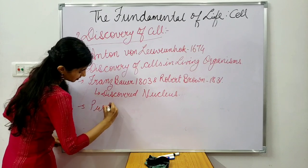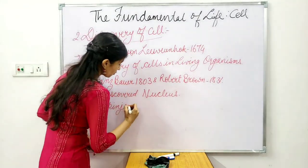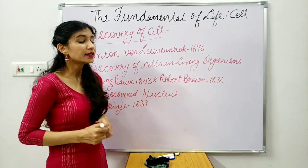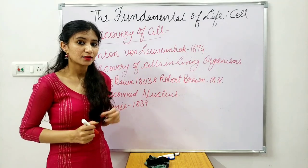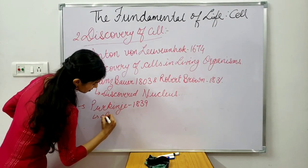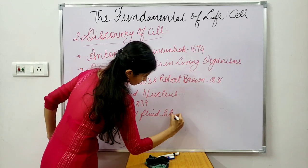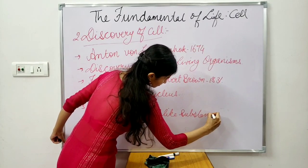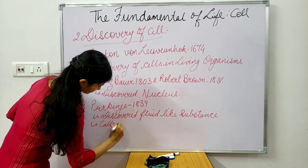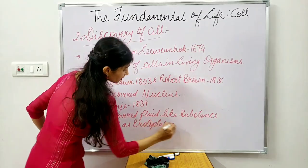After the discovery of the nucleus, another scientist — Purkinje — came in 1839 and studied the cell further. He discovered a fluid-like substance inside the cell and coined the term 'protoplasm' for it. Nowadays we call this the cytoplasm — it is the same thing.